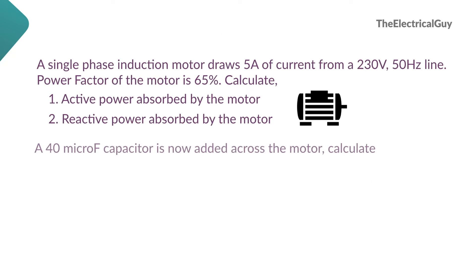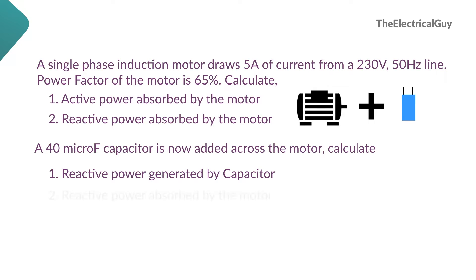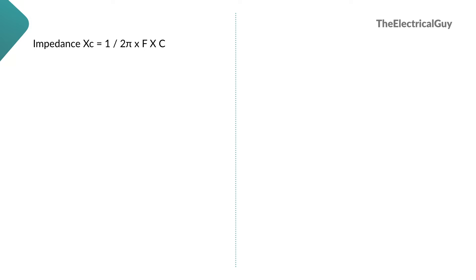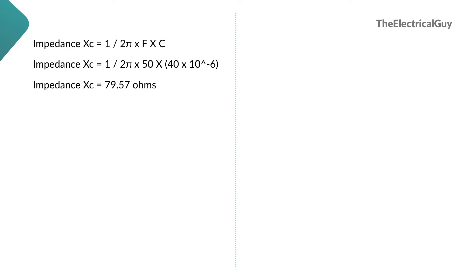Now for the second part of the problem: a 40 microfarad capacitor is added across the motor. We need to calculate: number one, reactive power generated by the capacitor; number two, net reactive power absorbed; and number three, the new line current. First, we find the impedance of the capacitor: Xc = 1 / (2π × f × C). Substituting values gives Xc = 79.57 ohms.